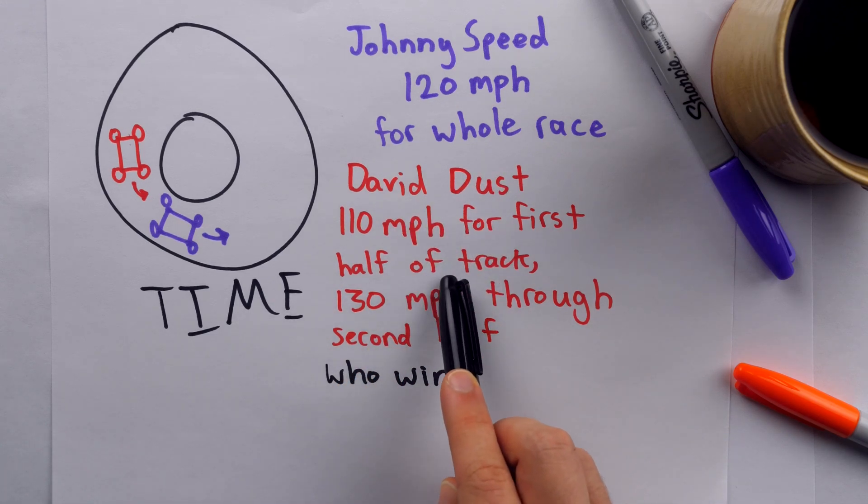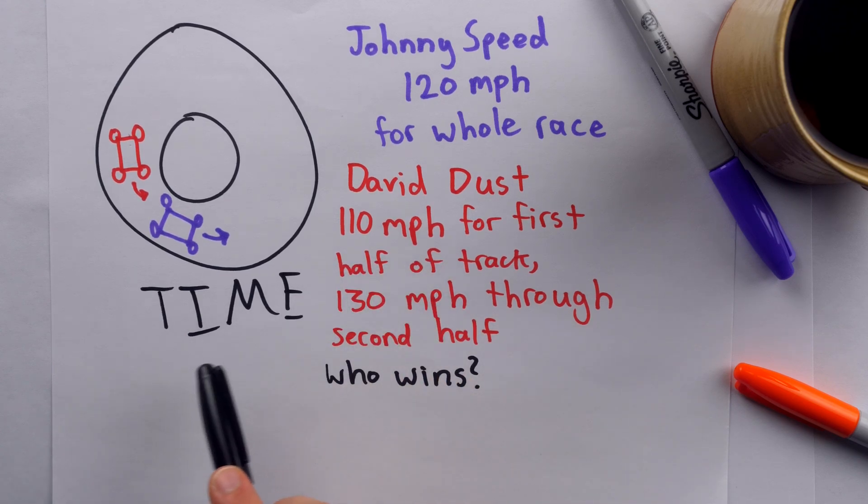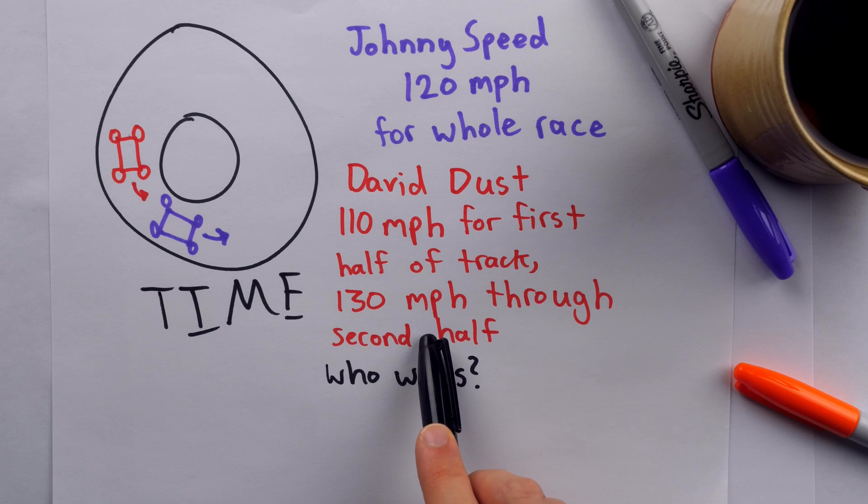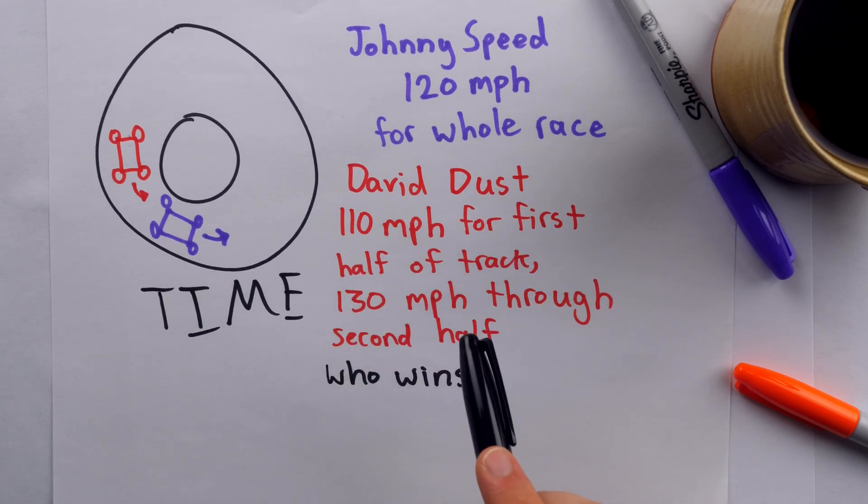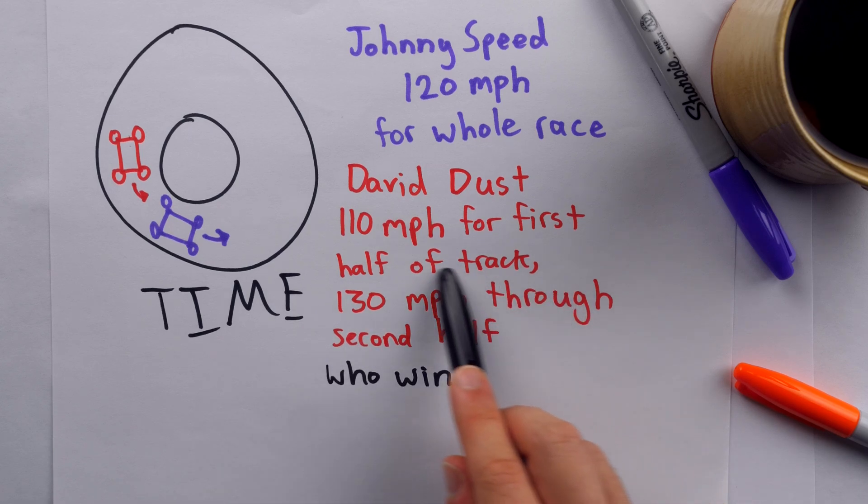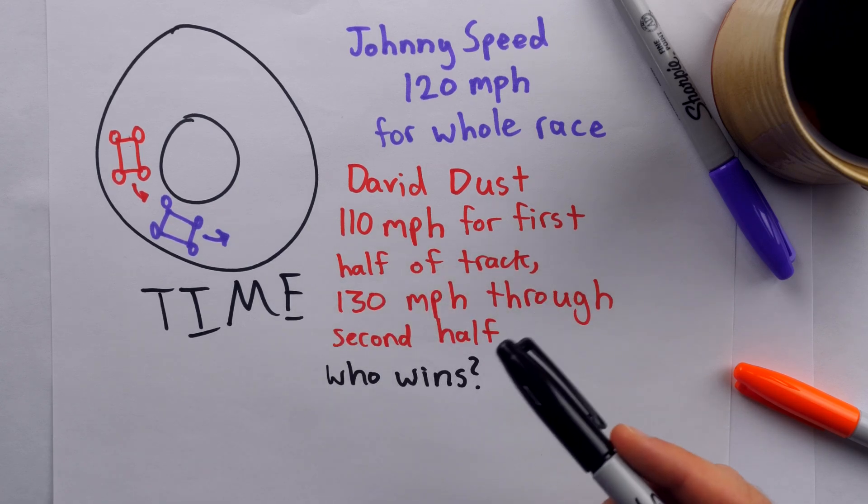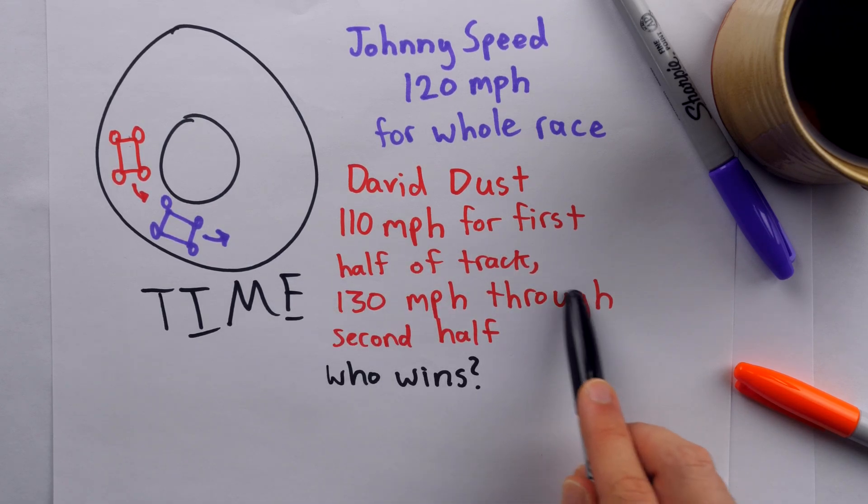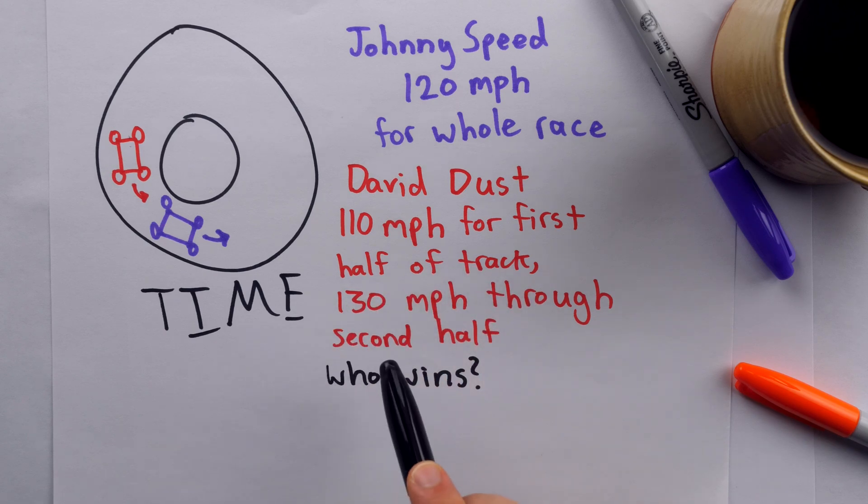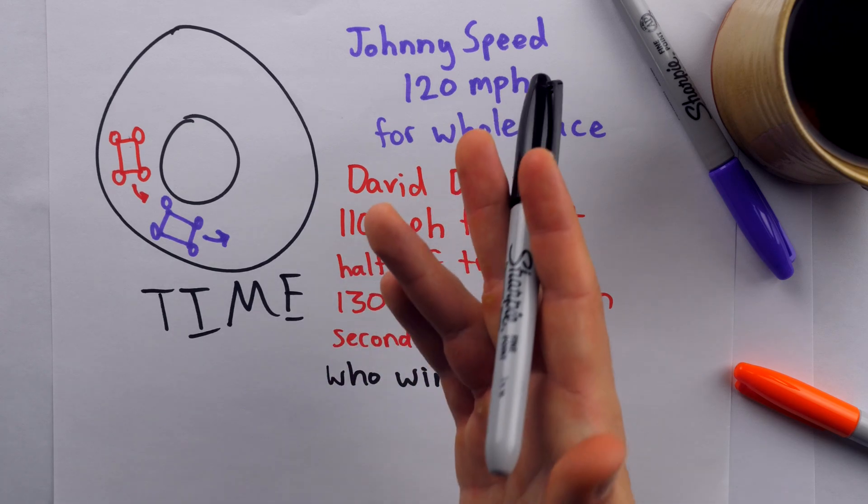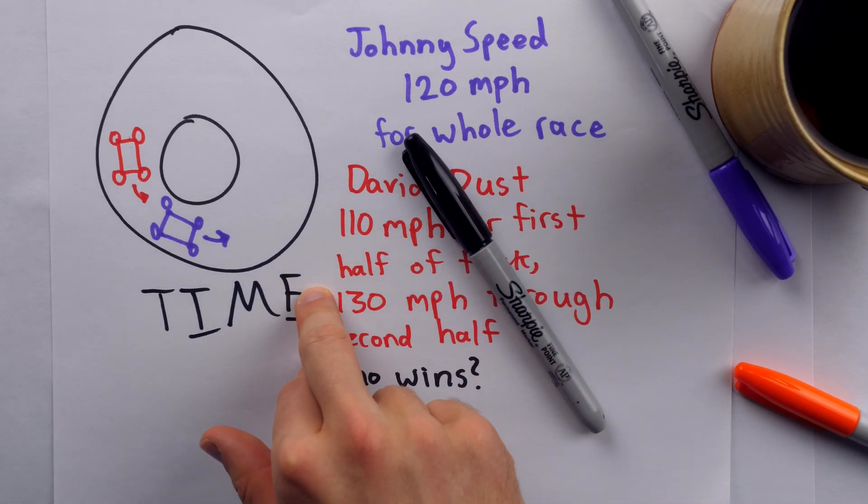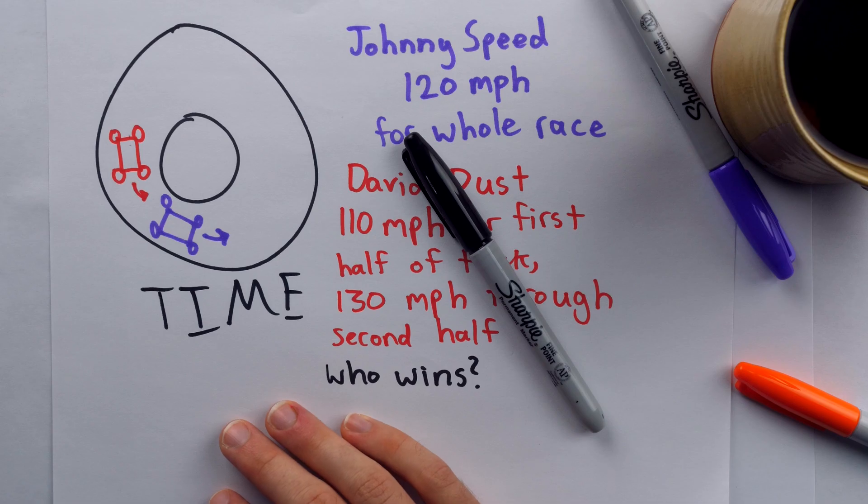But the thing is, he's going 130 miles per hour for the whole second half of the track, which means however long it takes him to get through the first half, it's definitely not going to take him that long to get through the second half. And then the question is, does he get through the second half of the track fast enough to end up outpacing Johnny Speed? Well, let's put some letters to this stuff, do a little bit of algebra, solve an inequality, and figure out who wins this race.